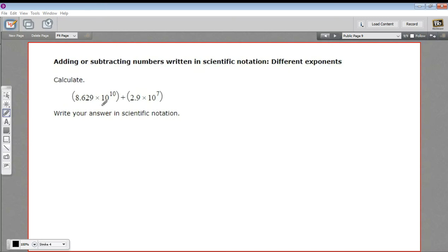In this problem, we are adding numbers written in scientific notation, but they have different exponents. So how do we handle that? We can't just add these two numbers. We wouldn't know what power of 10 to multiply them by at the end. So what do we do here?